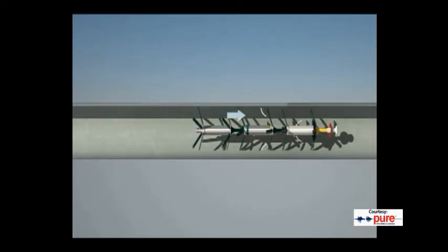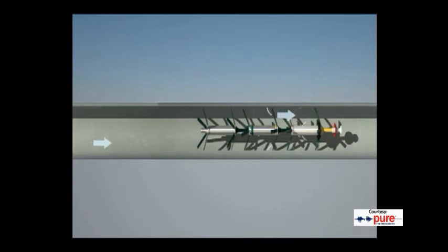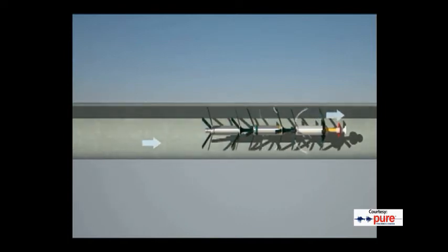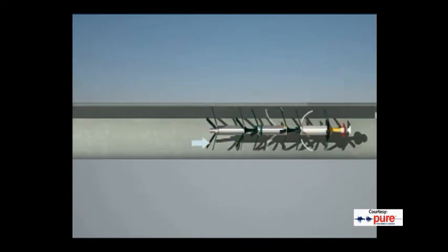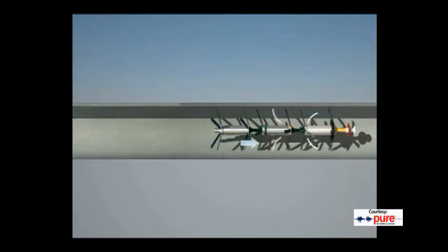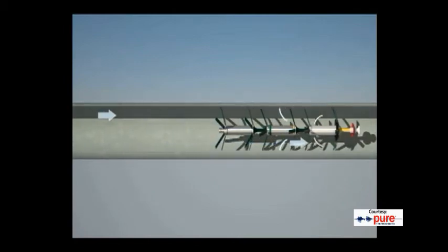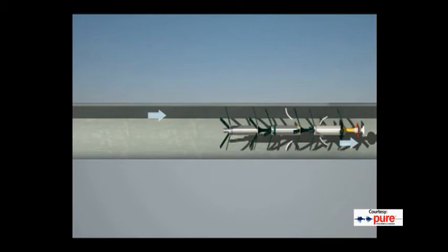PipeDiver sends and receives signals and functions much in the same way as a radio transmitter. The signals are amplified within the pipe and signal distortions pinpoint distressed areas within the line.